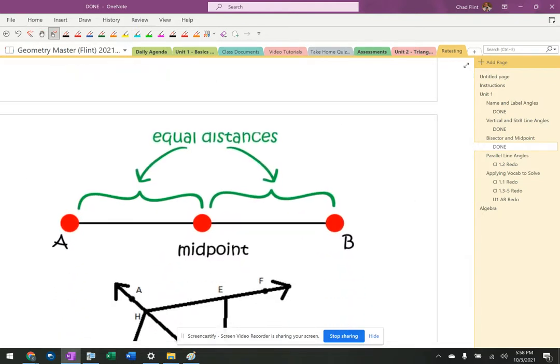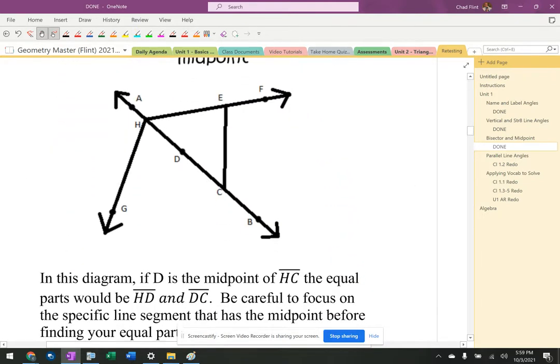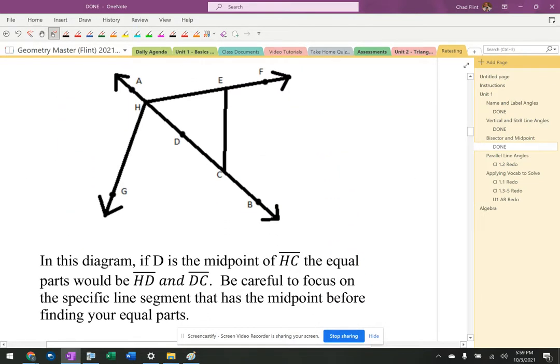So if you scroll down here, it's got a quick picture of a midpoint. But I'm more interested in this right here. It says if D is the midpoint of HC, what are the equal parts?